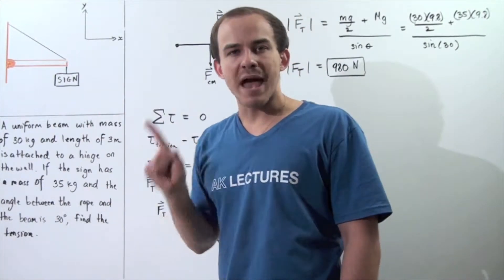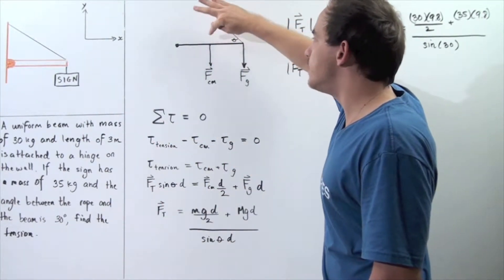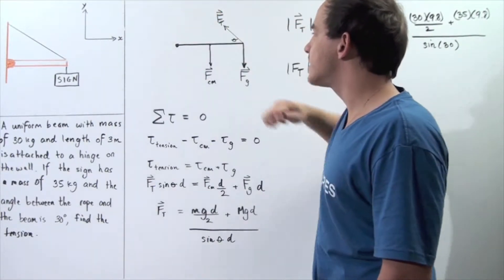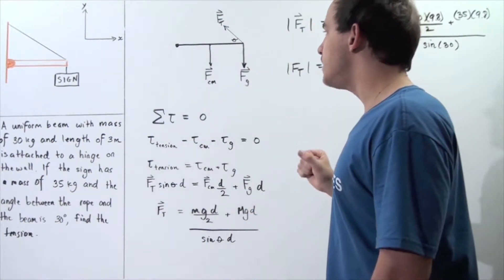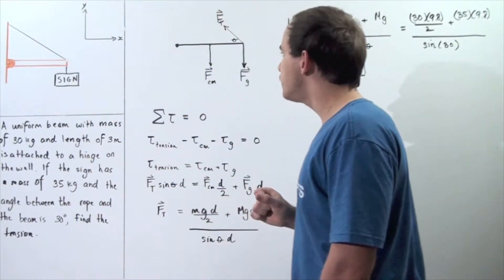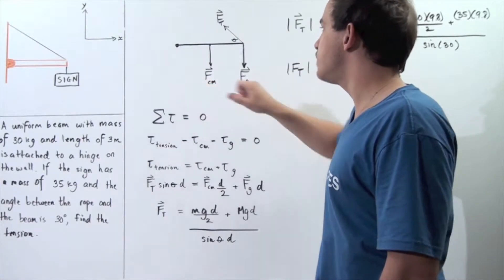Because the object has uniform mass, that means the center of mass is right in the middle, a distance of 1.5 meters from the axis of rotation. So we have three forces acting on our beam. We have the force of gravity acting on the beam at the center of mass at this position, given by force center of mass.